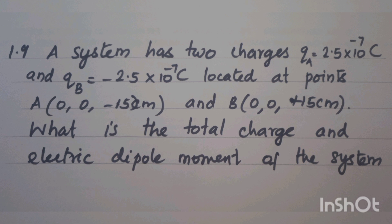QA is equal to 2.5 into 10 power minus 7 coulomb and QB is equal to minus 2.5 into 10 power minus 7 coulomb, located at points A (0, 0, -15 cm) and B (0, 0, +15 cm). What is the total charge and electric dipole moment of the system?